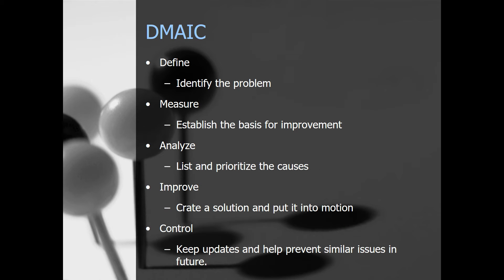The last thing to cover is DMAIC, which is an acronym for Define, Measure, Analyze, Improve, and Control. This refers to a data-driven improvement cycle used for improving, optimizing, and stabilizing business processes or designs, and is a tool used to drive Six Sigma projects. In this context, first you would define or identify the problem you're having with your wait times or queuing. Then you establish the basis for improvement — what needs to be improved and what doesn't. Then you analyze by listing and prioritizing the causes and understanding them better.